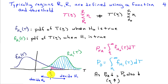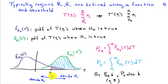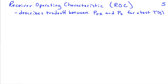To really characterize the performance of a test, we need to understand how PFA and PD behave together. The ideal scenario is PFA equals zero and PD equals one — a perfect test that never makes mistakes. However, if the PDFs have any overlap, it's impossible to choose a threshold achieving that performance. To capture the relationship between PD and PFA for a given test, we use something called the Receiver Operating Characteristic, often abbreviated as ROC, which describes this trade-off for a given test T(X).